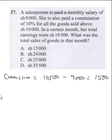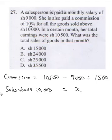Now you need to establish the amount extra that she earned, because the question says she gets 10% on sales above 10,000. So sales above 10,000 earned her a commission of 1,500. Let's call that X. To get X, we do 10 over 100 multiplied by X equals 1,500.